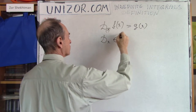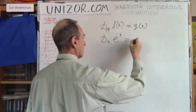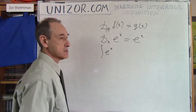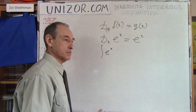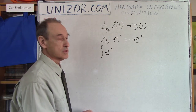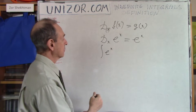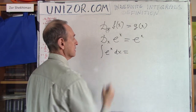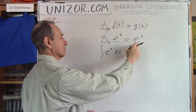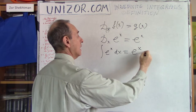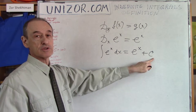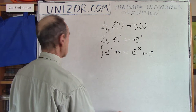Another example: what is the derivative of e^x? We know that the derivative of e^x is e^x itself. Therefore, the integral of e^x dx equals e^x plus C. This is called, by the way, an indefinite integral. So whenever I say 'integral' in this lecture, I mean an indefinite integral.